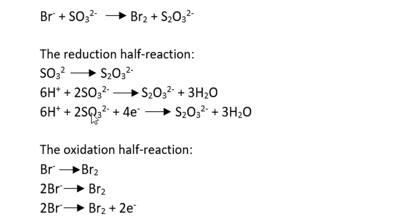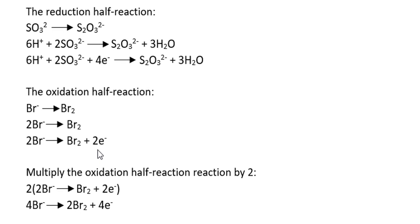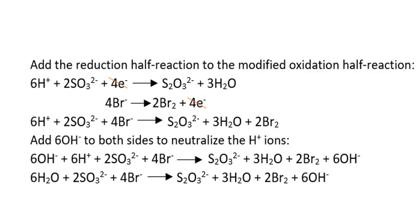To balance the reduction half reaction, we add three waters to the right side to balance the oxygens, then add six H⁺ to the left side, and finally add four electrons to balance the charge. For the oxidation half reaction, we place a coefficient of two in front of the bromide ion to balance the bromines, then add two electrons to the right side to balance the charge. To equalize electron transfer, we multiply the oxidation half reaction by two, then add the two balanced half reactions.